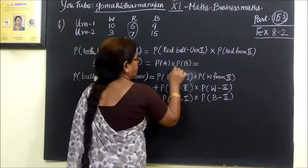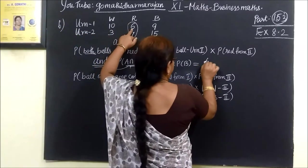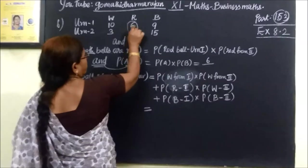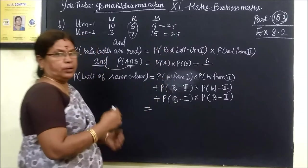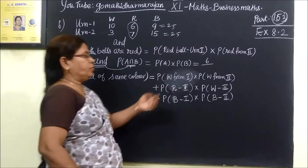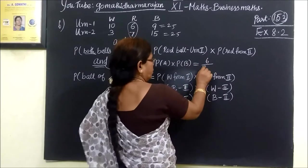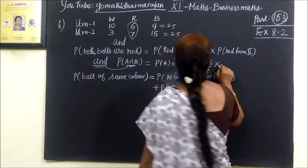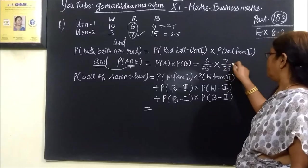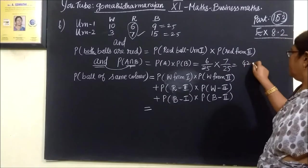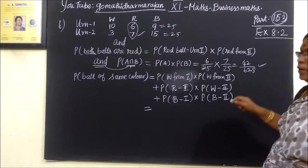This is 6. So 6, 5. Total number of balls are 25. Now total number of balls are 25, that's what, 7. So 7 by 25. So answer is 42 by 625. That's what it is.